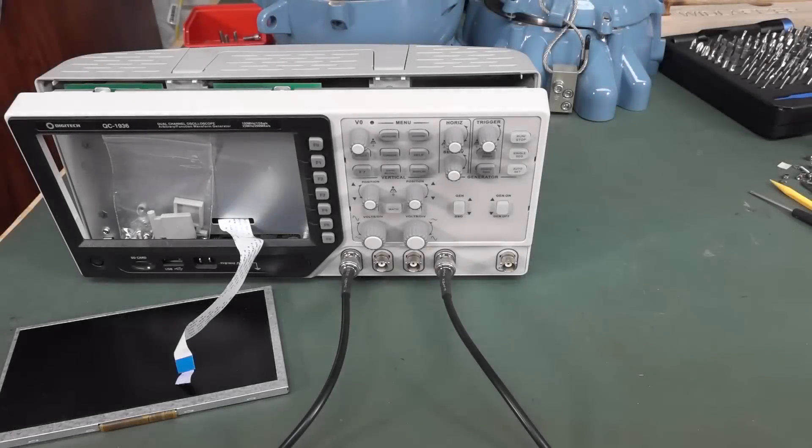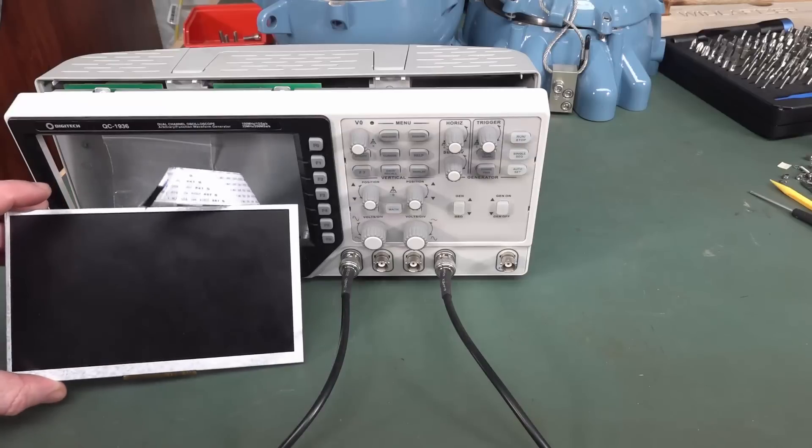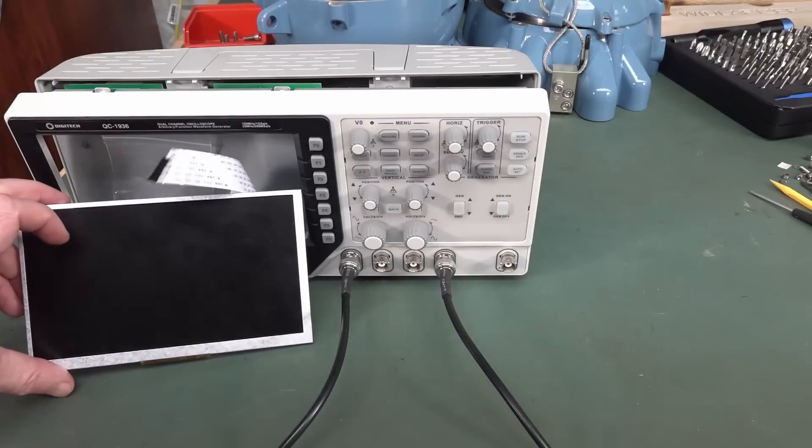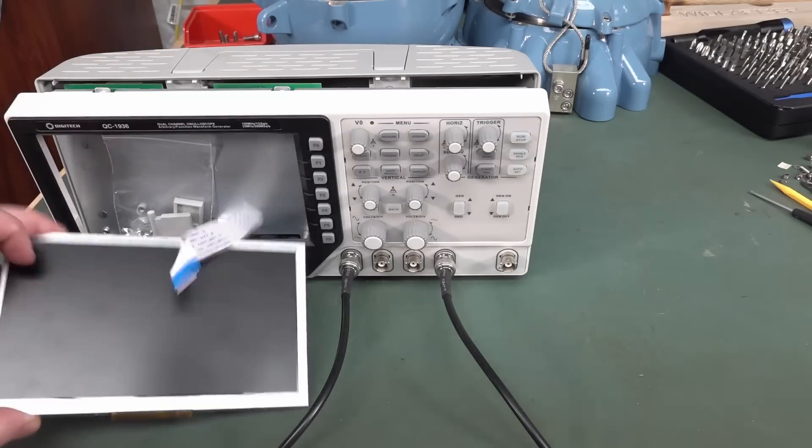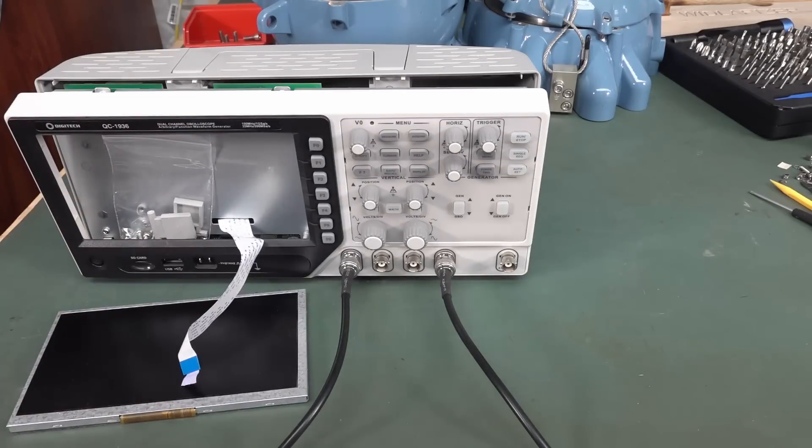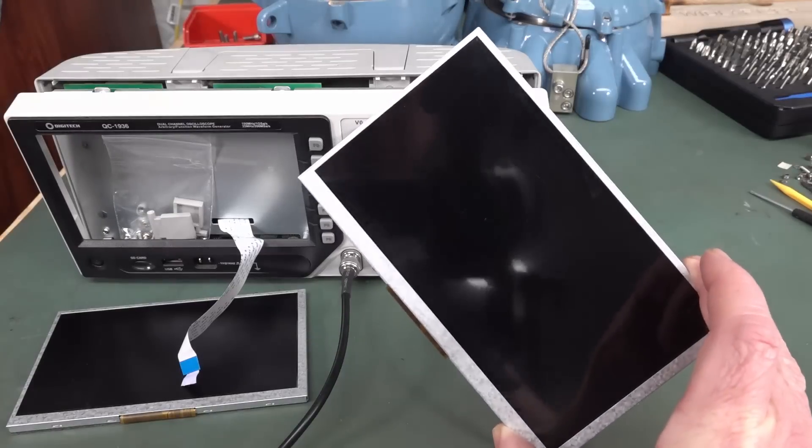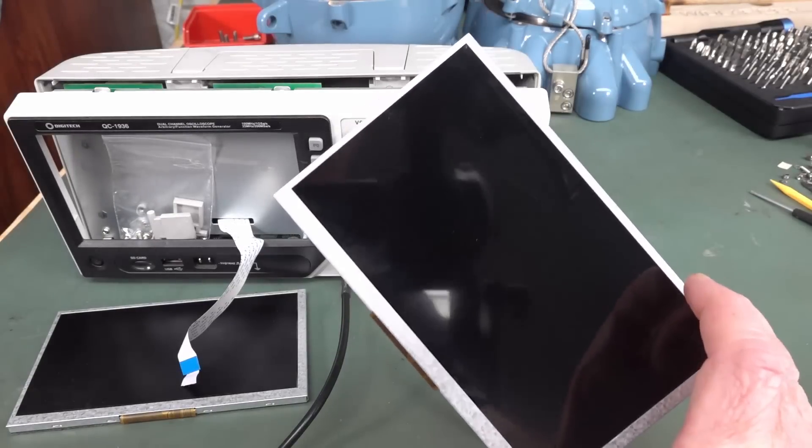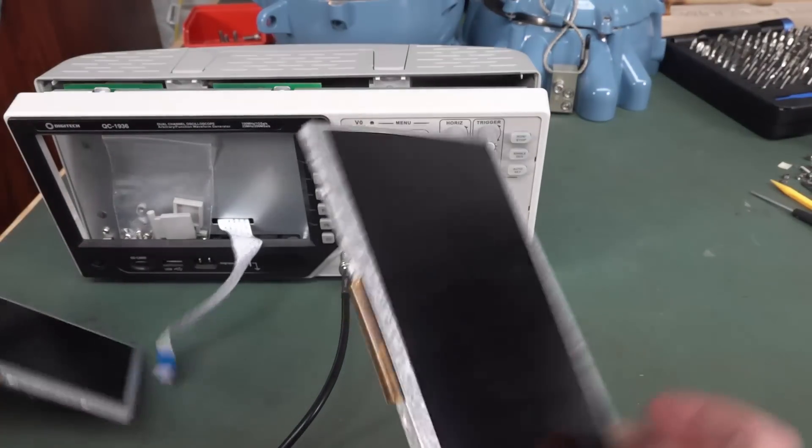Hi, check out what just turned up in the snail mail. You remember my broken Digitech QC1936 five dollar scope? Well, I got the replacement screen for it. That was way quicker than I thought. And here it is.